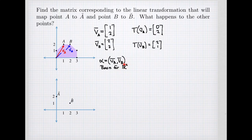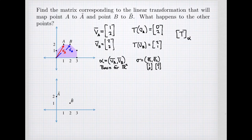We have a basis for all of R², and we have an image for each vector in that basis. The image vectors are represented in their standard coordinates, so we have a second basis — our standard basis — which is our natural basis: (1,0) and (0,1). This information tells us the matrix for T going from basis alpha to basis sigma, where the first column is the image vector (0,2) and the second column is (2,1).